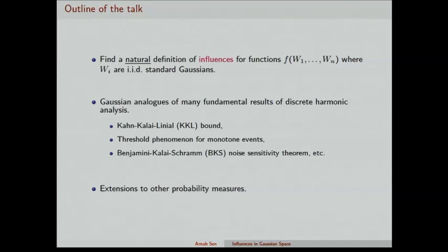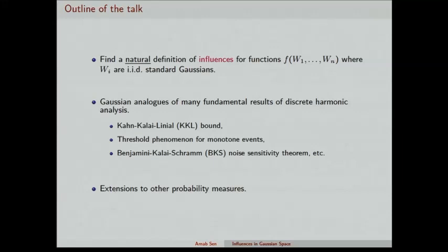I will give you the definition — hopefully you will find it attractive — and then I will show that like there are many fundamental results in the discrete space, you can also prove the Gaussian analogues of those results using this Gaussian influence. For example, the KKL bound, Russo's lemma, the threshold phenomenon for monotone sets, the Benjamini-Kalai-Schramm noise sensitivity theorem, etc. I will also indicate how you can extend this notion to more general probability measures. That's the outline of the talk.